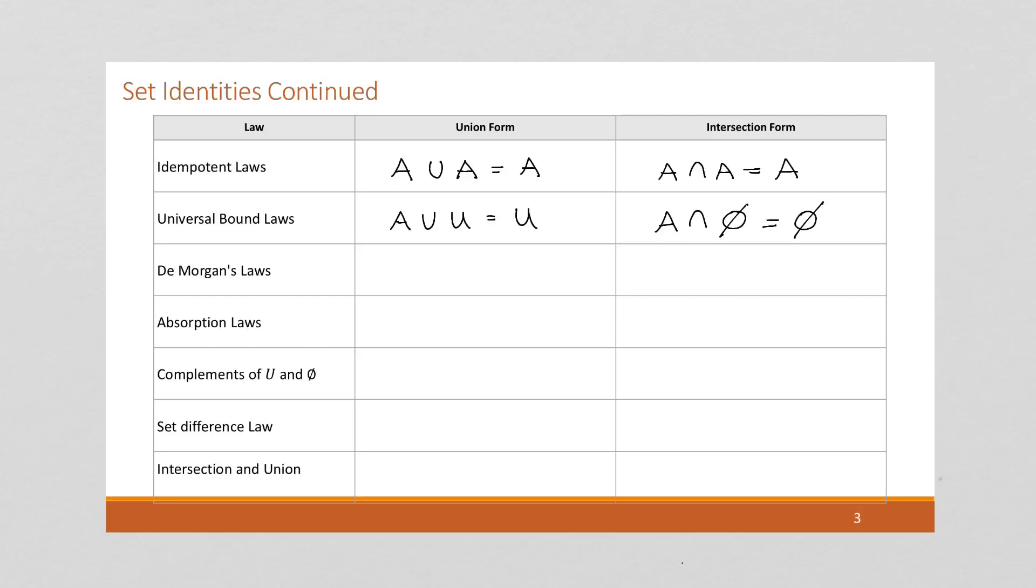De Morgan's laws, that should ring a bell. This is the same thing as with Boolean algebra, except now we can apply them to sets. In Boolean algebra, we use negations with sets. The negation is really the complement. So here, if I have A union B complement, this is going to be equal to A complement intersect B complement. And we're going to prove this in a later video.